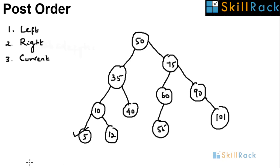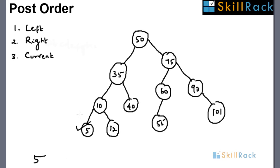We print 5, and then we have to print the right part. Now coming back to 10, but 10 has a right part, so we have to print 12. As 12 is a leaf node, we can't go further. And then 10 is printed, the current node.